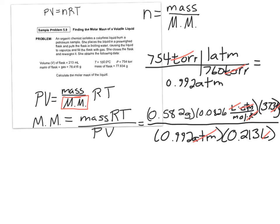So those are my units. Now let me do some math. I've got 0.582 times R, which is 0.0826 times 373 Kelvin divided by my pressure times my volume. And I've got the molar mass of this guy is equal to 84.86 grams per mole.